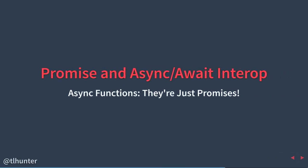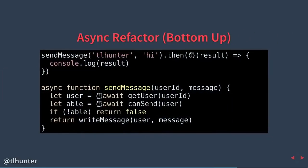The cool thing about async and await is they're just promises under the hood. The getUser and canSend functions you await can actually just be plain promises — async functions and promises are 100% interoperable. This means you can refactor your application from the bottom up. For example, sendMessage could be your controller or Express handler, while the inner send could be your model interacting with the database. Maybe you want to change all the models to async functions first while leaving controllers the same — you can definitely do it from the bottom up.